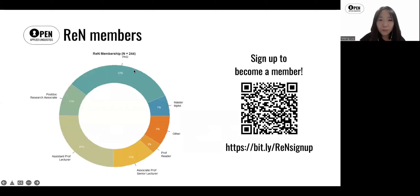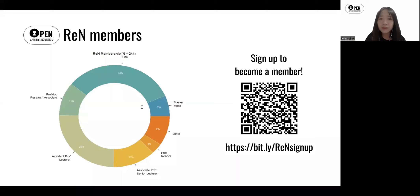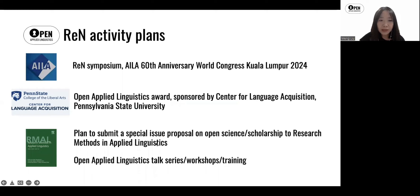What you're looking at here is really the most important component of our network — the network members. Currently we have 244 registered members, and you can see we have a reasonable representation across different career stages, particularly for people in earlier stages of their career. You're more than welcome to join us by signing up to our mailing list, which is free and simple. Now let's move on to our activity plans.